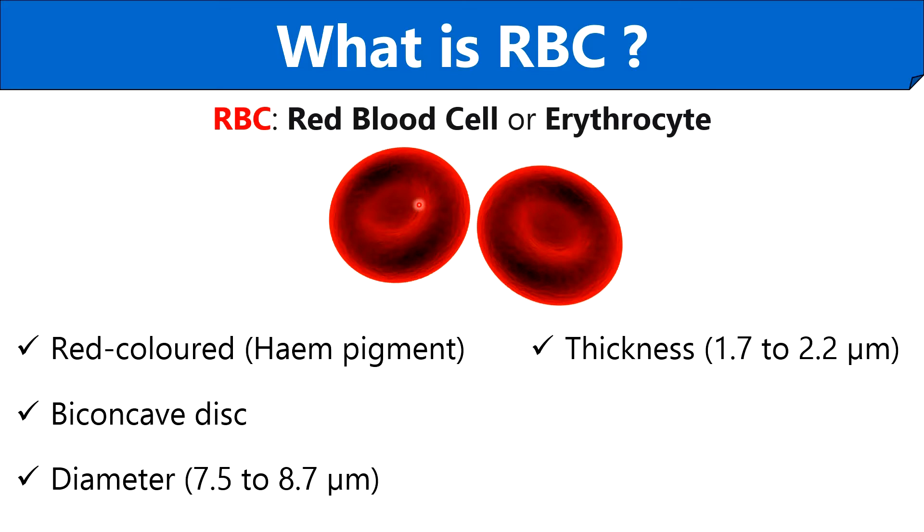RBCs have a thickness of 1.7 to 2.2 micrometers. Another important feature of RBCs is that they are anucleated, which means the nucleus is absent in RBCs.